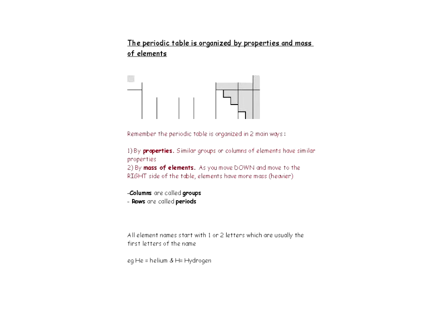We're going to talk about the periodic table. The periodic table is amazing in the way it's organized. It can be organized by properties and by the mass of the elements. The picture is showing that the left side can be separated from the right side, with a staircase separating the two.